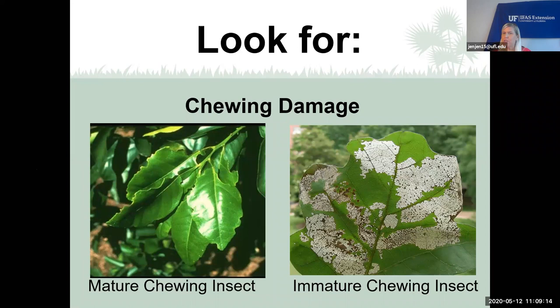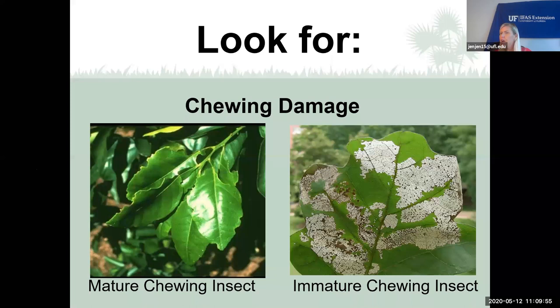When scouting for insects, look for chewing damage done by caterpillars, beetles, and grasshoppers — they chew holes into plants. The plant on the left has holes or chewing marks around the edges, most likely from a caterpillar, beetle, or grasshopper. The one on the right shows an immature caterpillar that just hatched — it doesn't have full mandibles yet, so it just chews along the leaf tissue causing a skeletonizing effect, leaving some tissue behind.